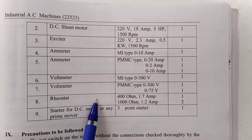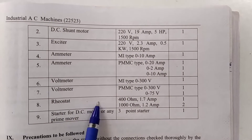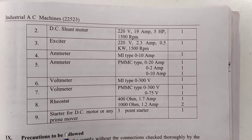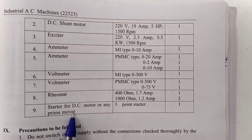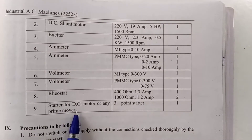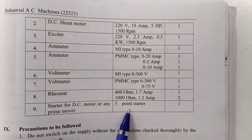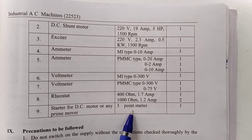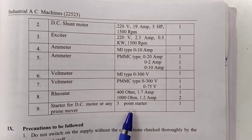A rheostat or variac is used, with a rheostat acting as a field current control wire to control the field current.